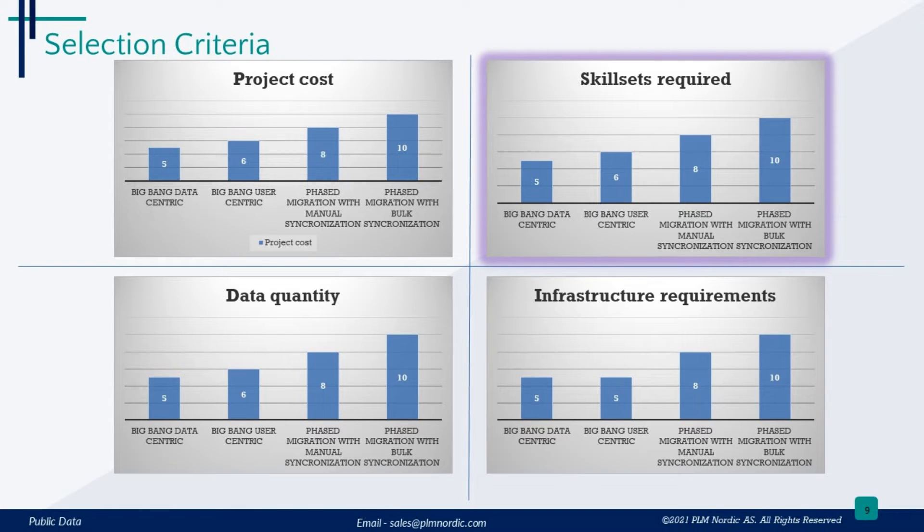When it comes to skills, choosing the Big Bang data-centric migration allows you to handle things with less skilled people. However, as the process becomes more complex, you'll need highly skilled and experienced professionals to manage the intricacies of phased migration with bulk synchronization.